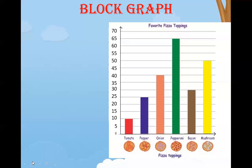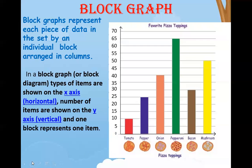What is a block graph? A block graph represents each piece of data in the set by an individual block arranged in columns. In a block graph or block diagram, types of items are shown on the x-axis, that is the horizontal line. Here, tomato, pepper, onion, pepperoni, bacon and mushroom are on the x-axis. The number of items are shown on the y-axis, that is the vertical line. You can see the numbers 0, 5, 10, 15, 20, and so on up to 70 on the y-axis.